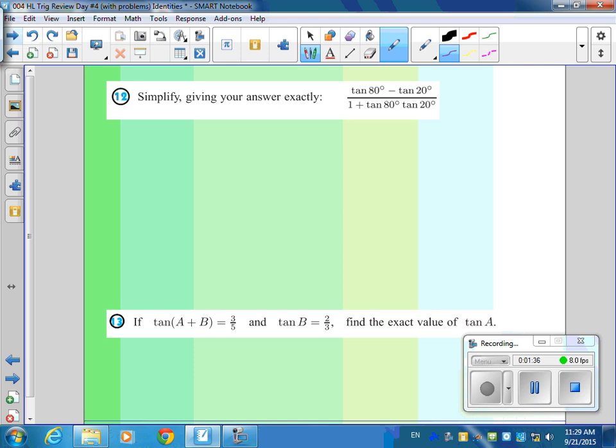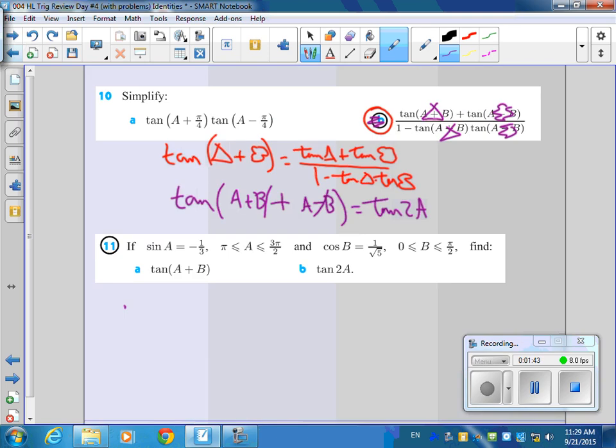Everything okay with 11? Any other ones that you want to see? And 12 is similar, you just use the formula. On the previous slide, 11B? Sure. So the tangent of 2A is 2 times the tangent of A over 1 minus tangent squared A. Remember that formula?